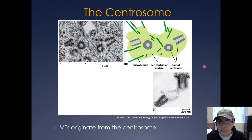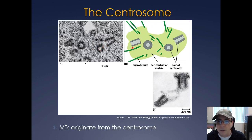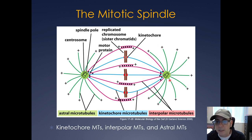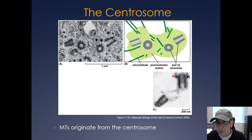Looking at the centrosome, there's actually a pair of them. They go through division and get separated to opposite poles of the cell. The centrosome is enriched with gamma tubulin, which is a nucleating agent for microtubules. The key take-home message is that the microtubules in the mitotic spindle originate from the centrosome.